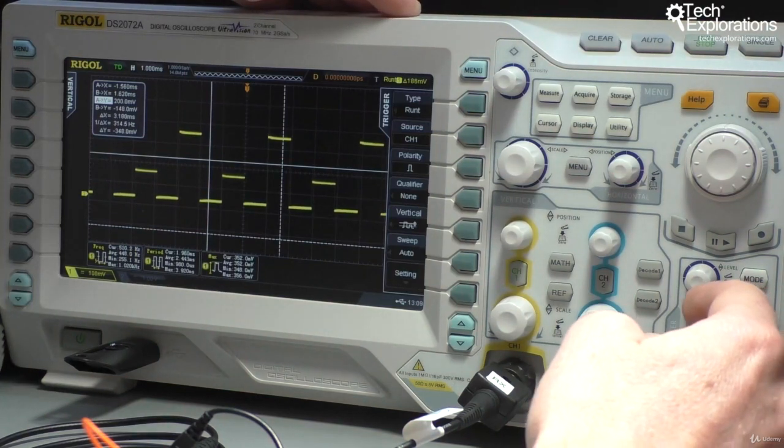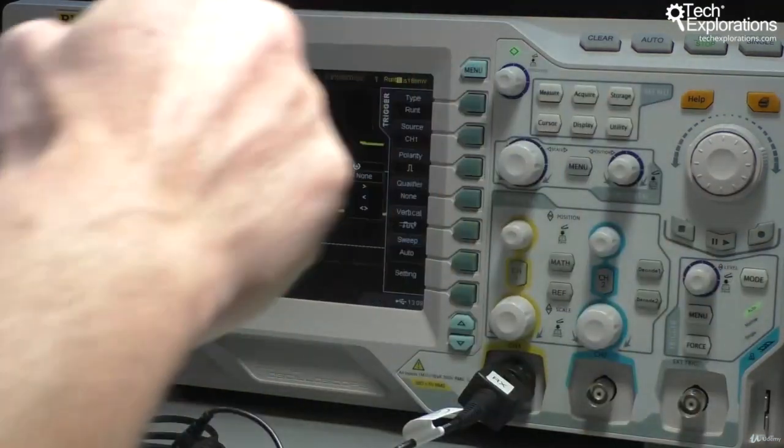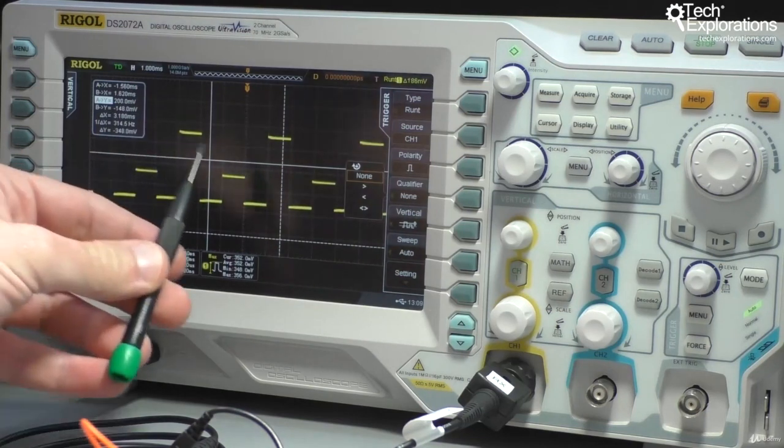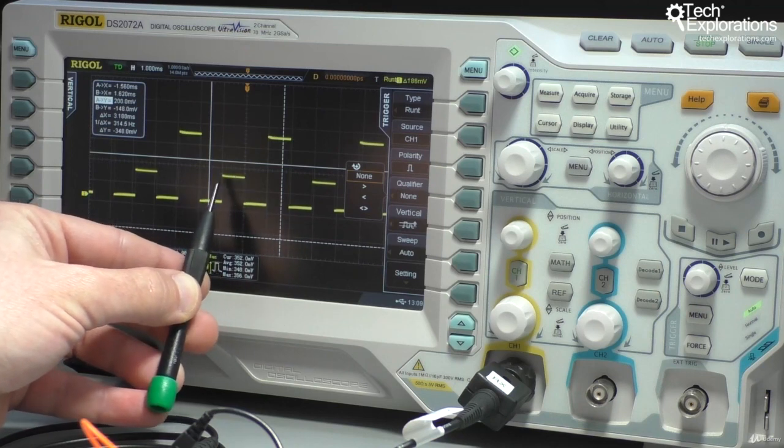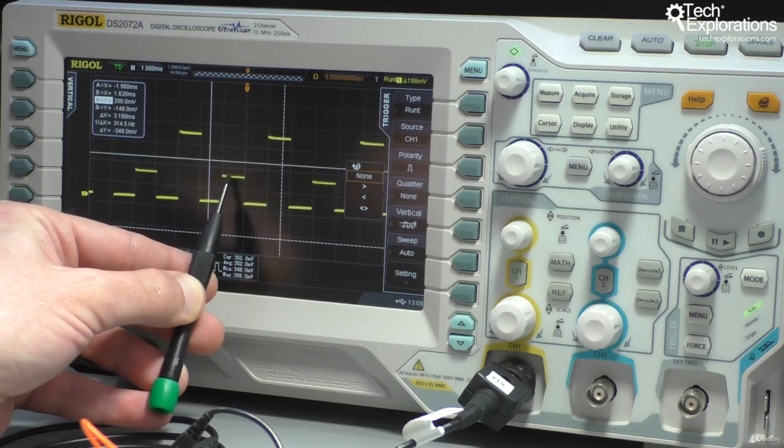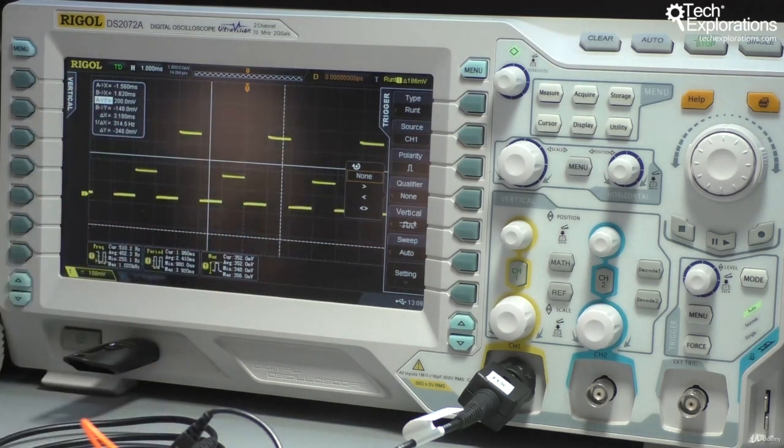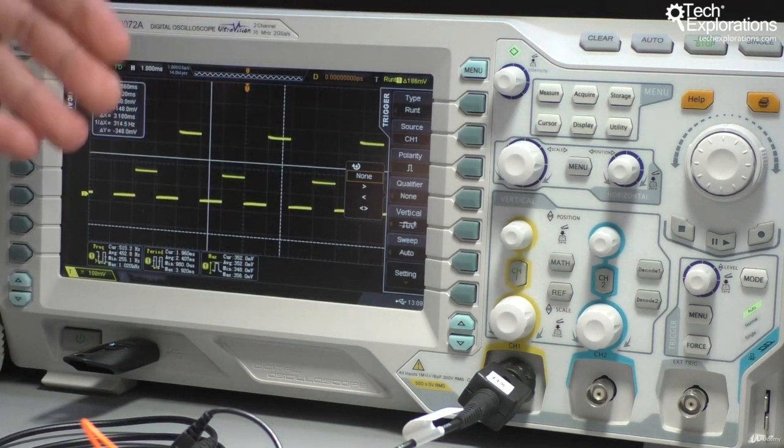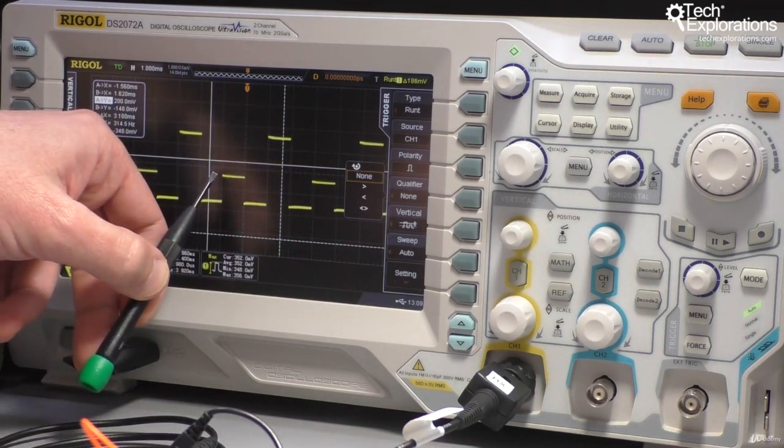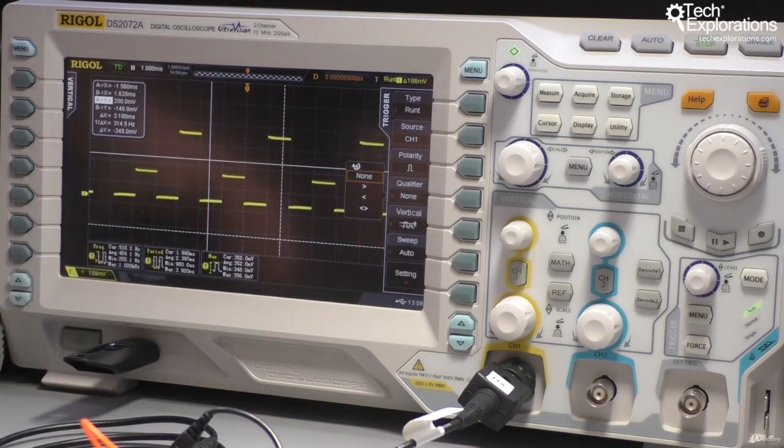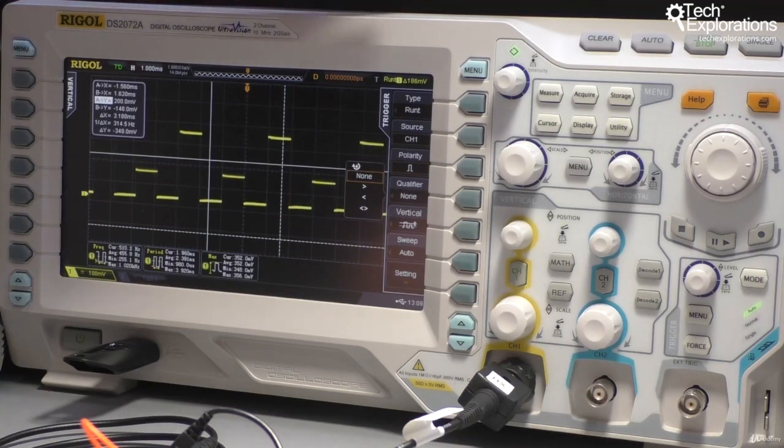Another thing that I can do here with the Runt type trigger is to set this qualifier. So this qualifier allows me to calibrate the Runt not in terms of voltage but in terms of the width, how long this signal should be at this level, for how many milliseconds or nanoseconds. So if I want to get the oscilloscope to only trigger itself on the Runt trigger when the size of this trigger signal is a certain amount, below, above, or within, then I can calibrate it this way. So let's give it a go.